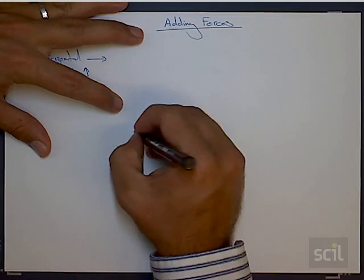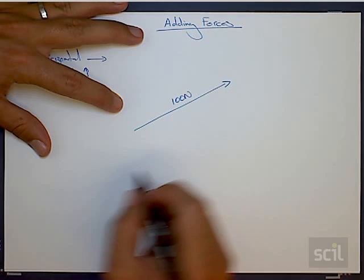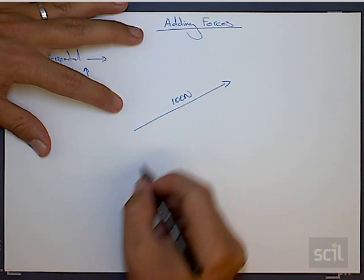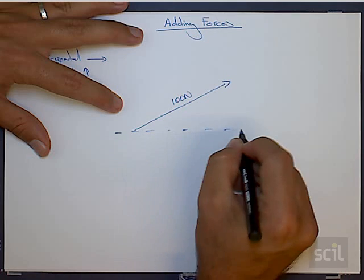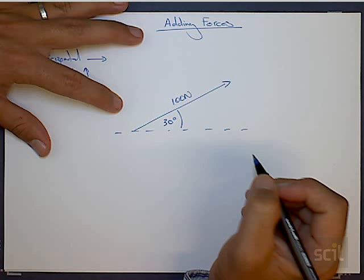the example of a 100 Newton force. This is what's called the free body diagram, and this force is acting at an angle of 30 degrees to the horizontal.